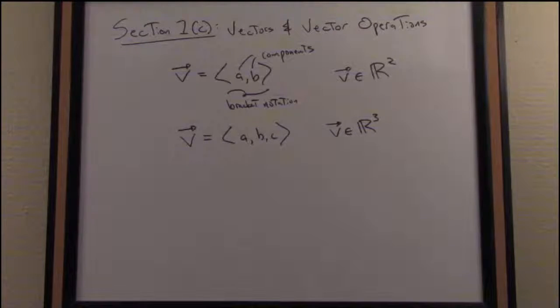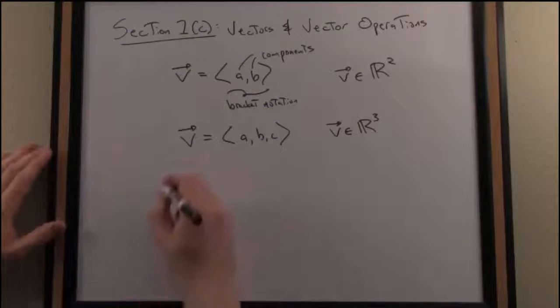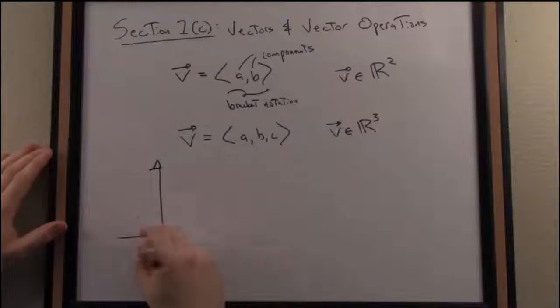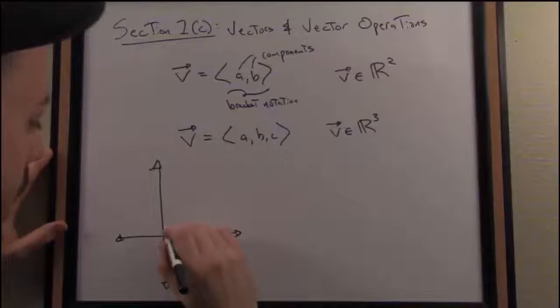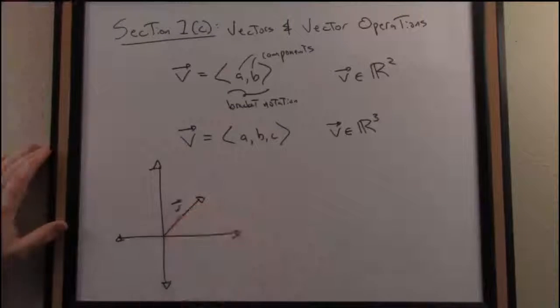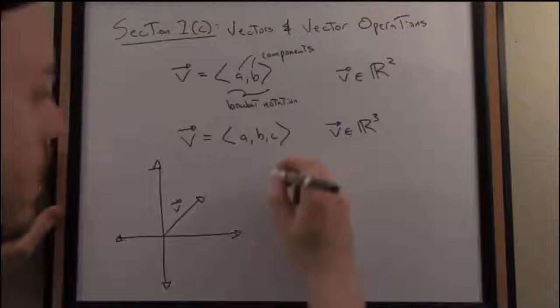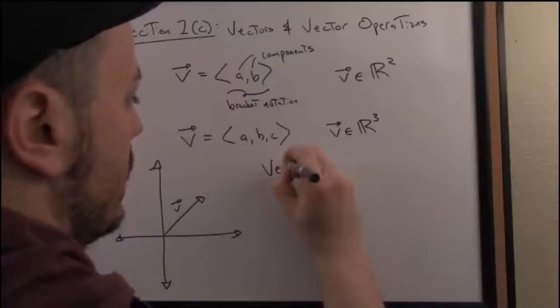I'd like to also make this notation cohere with a geometric interpretation, which is common for vectors. So how do I understand a vector in a geometric sense? Well, a vector is an object, a mathematical object, that has both a direction and a magnitude. So here's our basic geometric interpretation.